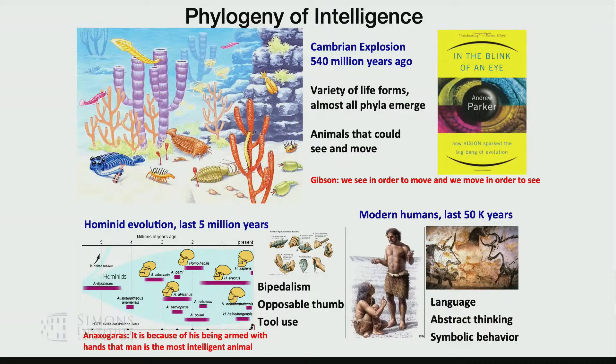There's a line from Gibson: we see in order to move and we move in order to see. One little example: predator and prey relationships cause evolutionary arms races. If there's a prey, they will evolve camouflage. A predator will try to detect the prey in spite of the camouflage. The prey will try to move away. Then the predator has to move faster to catch the prey, and so on and so forth.